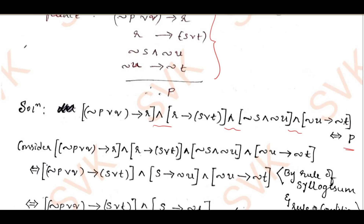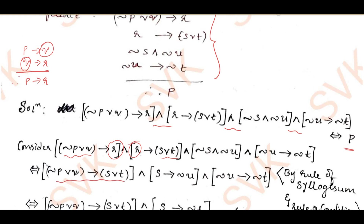You should know what rule of syllogism is. Rule of syllogism says that if p implies q and q implies r, finally I can write that as p implies r. So if you have p implies q conjunction q implies r, then I can write p implies r. Similarly, here negation p disjunction q implies s disjunction t, where r is common. Applying rule of syllogism, I got negation p disjunction q implies s disjunction t.